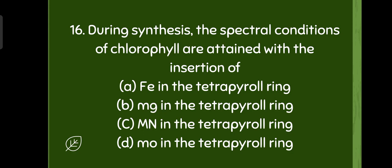During synthesis, the spectral conditions of chlorophyll are attained with the insertion of magnesium in the tetrapyrrole ring. Option B.